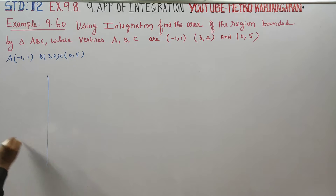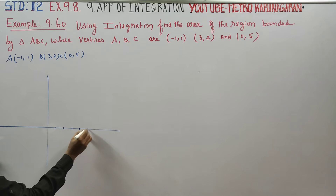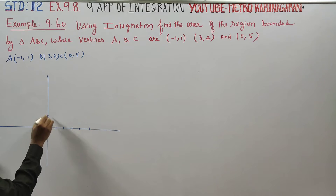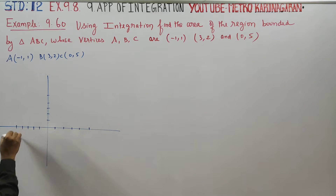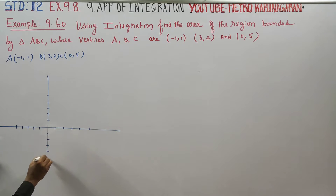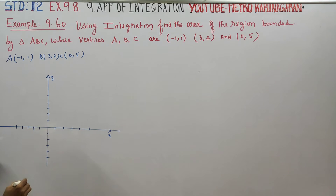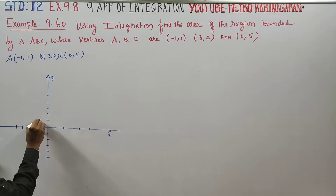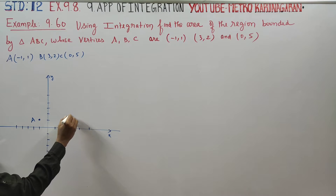First I am trying to find and draw the triangle. This is my x-axis, this is my y-axis. A point is at (-1, 1), this is my A point. B point is here at (3, 2), this is B point.